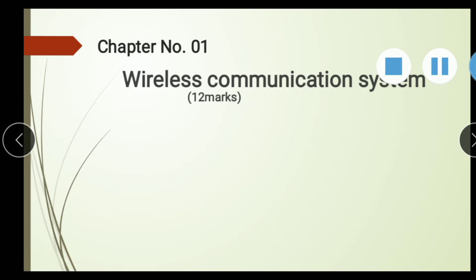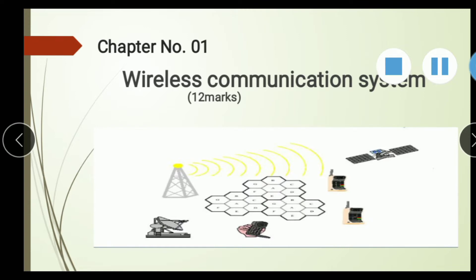Now we discuss our first chapter — Chapter Number 1: Wireless Communication System, which carries 12 marks. In this chapter, we discuss what is a cell, what is a transmitter, what is a receiver, what is a cell phone, what is a cellular system, what is an antenna, and what is a satellite.